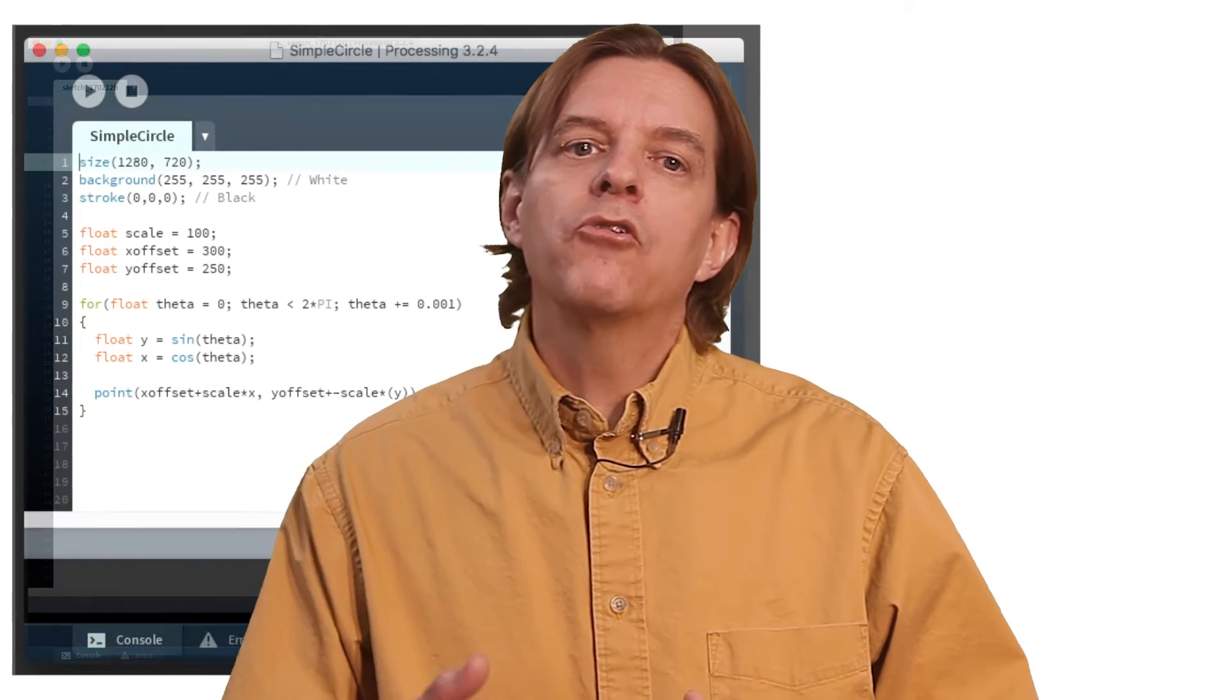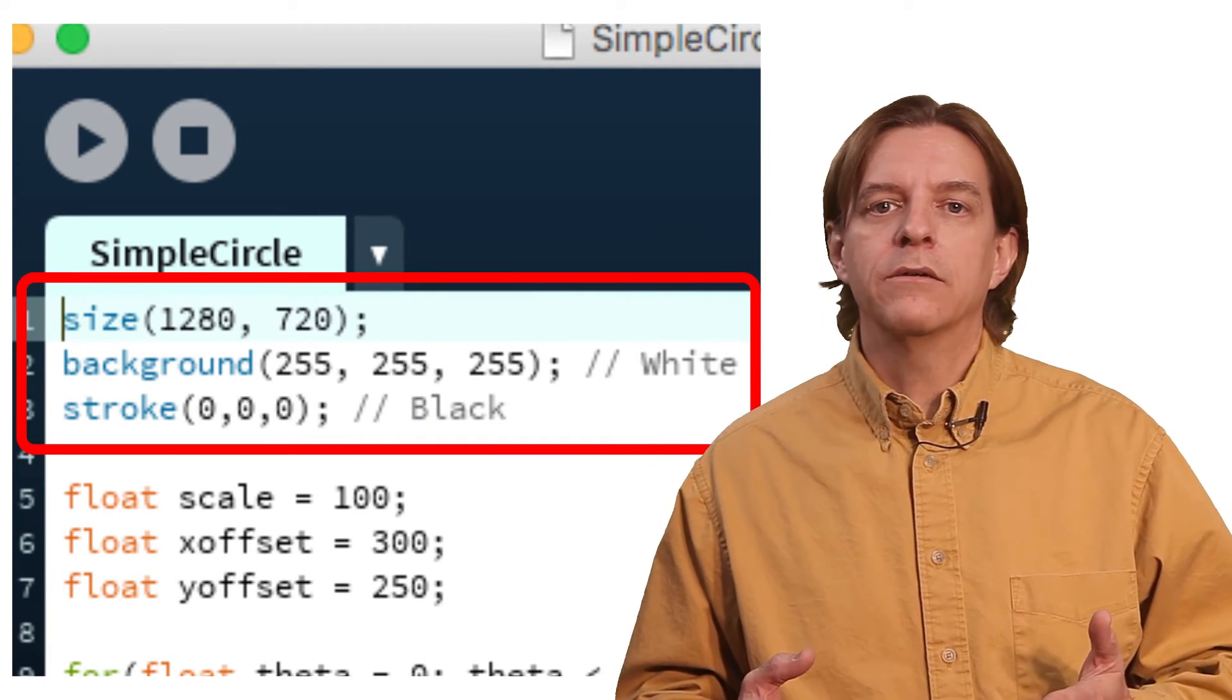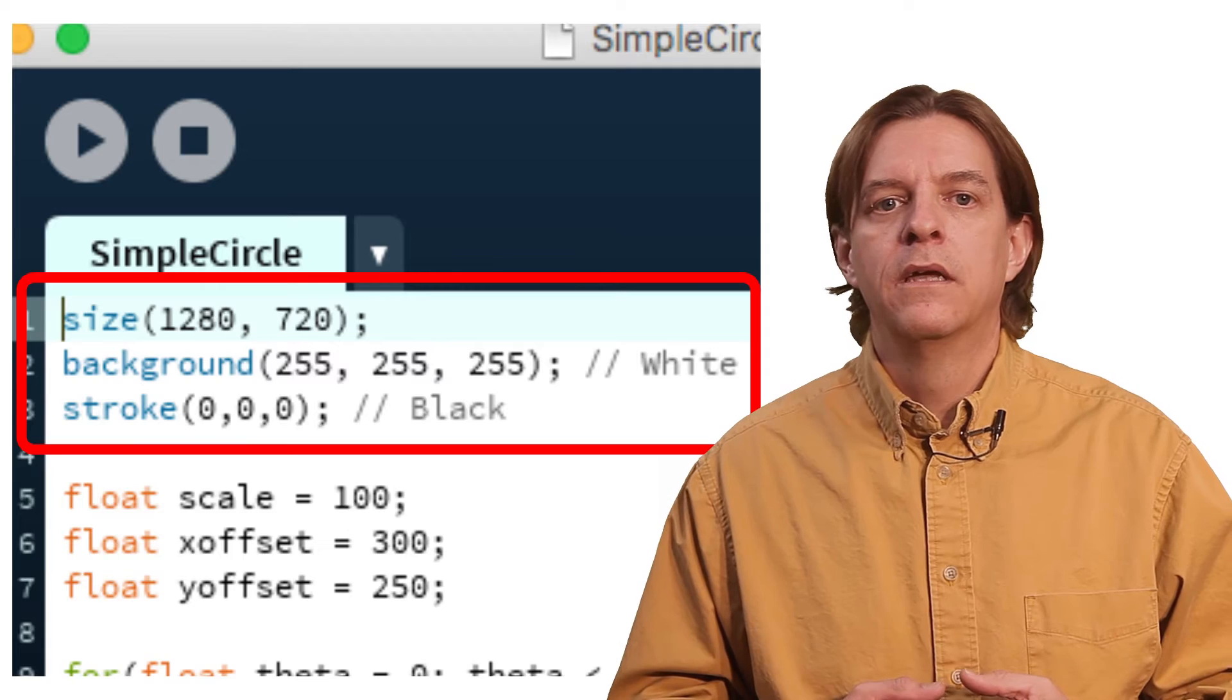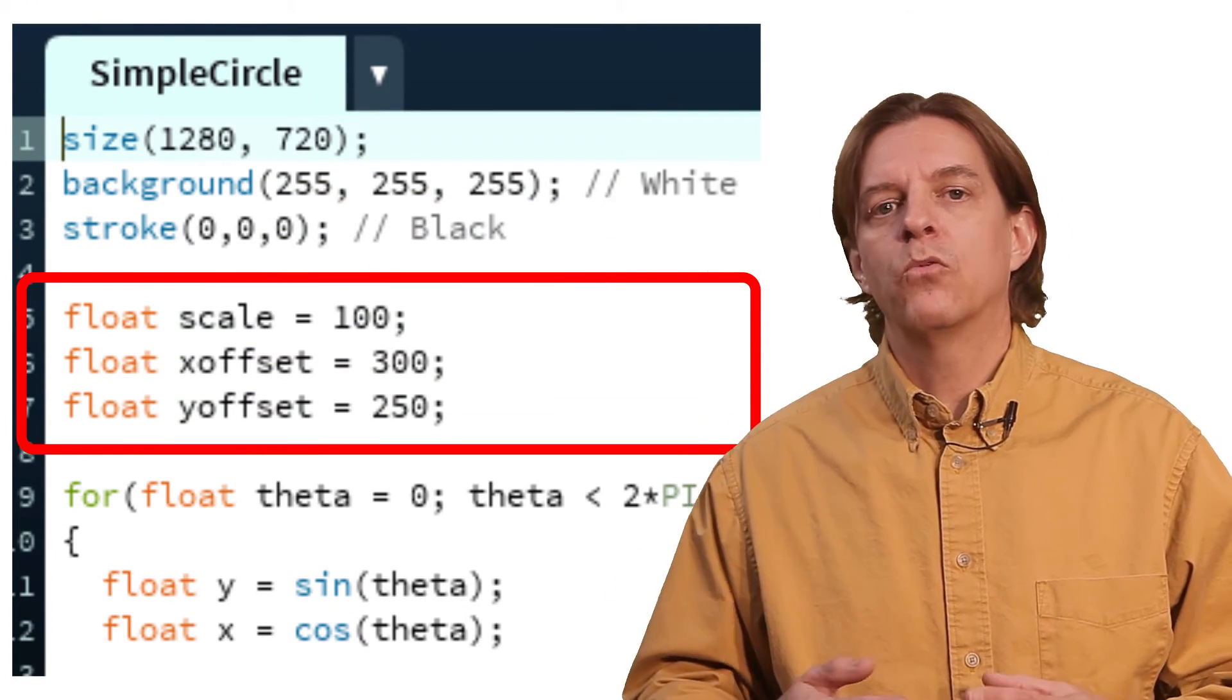Let's look at a simple program to draw a circle. We first define the size of our canvas, the color of our background, and the color we want to draw in. Then we're going to define a variable to scale our circle by and an offset for the x and y coordinates.